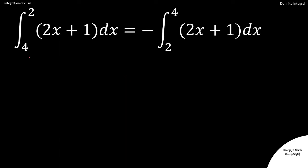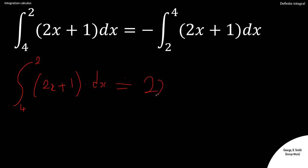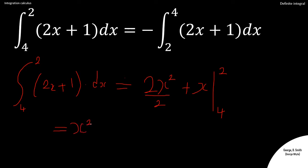So let's see if that works out. We're integrating the left hand side: from four to two of (2x + 1) dx. When we integrate 2x we get 2x²/2, and integrating one gives x. Since this is a definite integral we don't need plus c. The twos cancel, giving us x² + x, with limits from four to two.